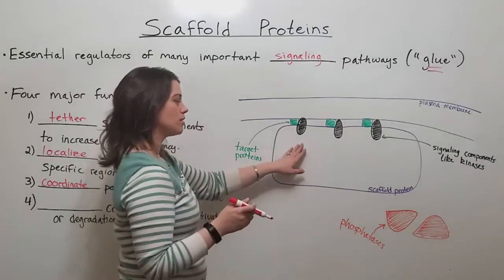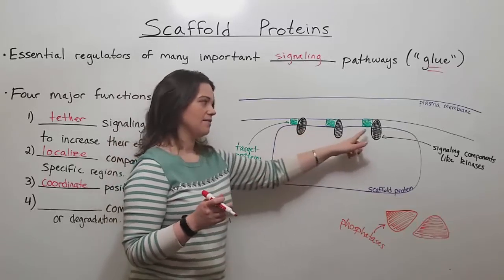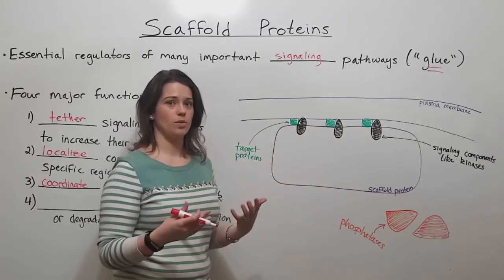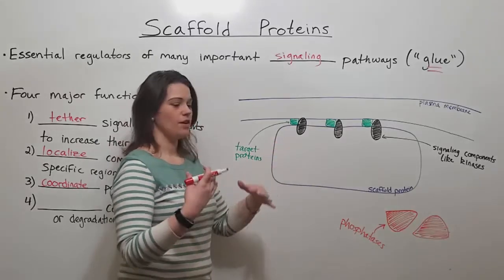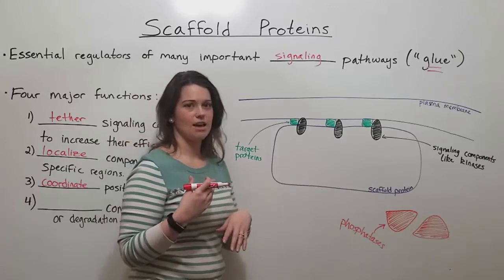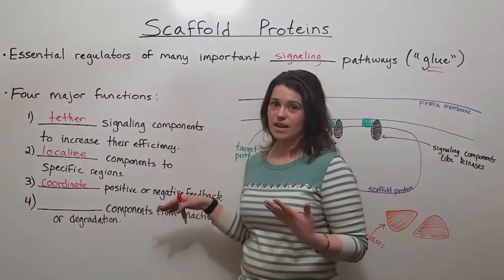Scaffold proteins can also, in some cases, deactivate signaling components once they've had a chance to work once or twice. Perhaps a kinase phosphorylates only one or two things and then gets inactivated by the scaffold protein. That would be a form of negative feedback.